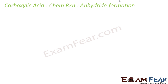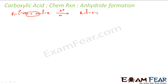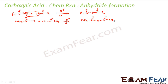Let's start with anhydride formation from carboxylic acid. If you take any two molecules of carboxylic acid and heat them with some mineral acid like H2SO4, a water molecule is lost and what you get is anhydride. For example, if you take ethanoic acid and heat it with acid, you get ethanoic anhydride.